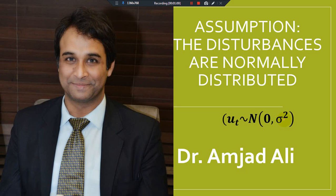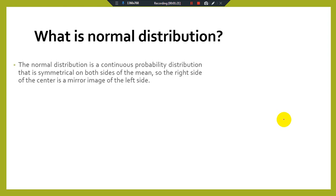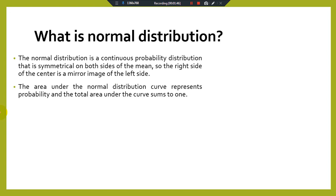Let's discuss the disturbance term being normally distributed. Before going into detail, let's discuss what normal distribution is. The normal distribution is a continuous probability distribution that is symmetrical on both sides of the mean — the right side of the center is the mirror image of the left side, and the left side is the mirror image of the right side.